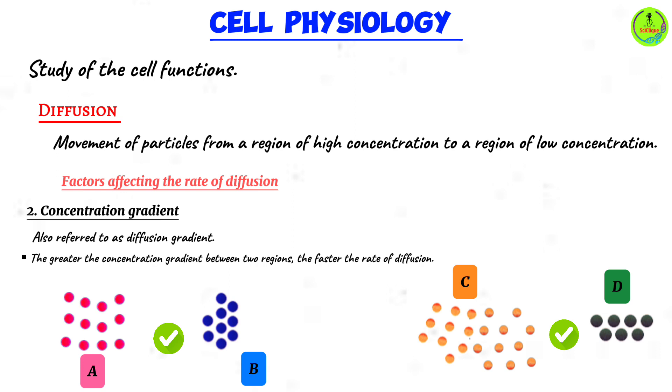But if you look at the difference, we have a higher concentration gradient in C and D as compared to A and B. Therefore, even though diffusion is going to take place in both cases, it's going to be faster in this case than in A and B.